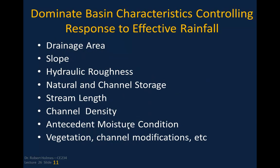The dominant basin characteristics controlling response to effective rainfall — which we allude to in USGS regression equations — include drainage area, channel slope, watershed slope, hydraulic roughness, natural and channel storage, stream length, channel density, antecedent moisture condition (how wet and saturated the ground is prior to rainfall onset), vegetation, channel modifications, and other factors.